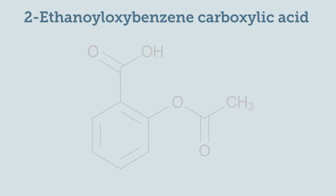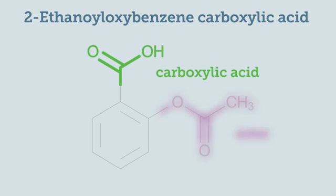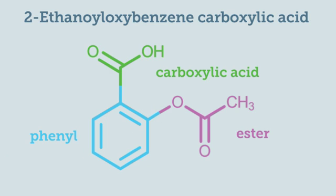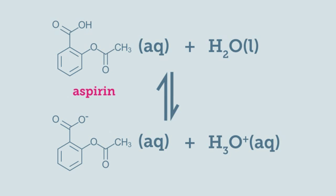The chemical name for aspirin is 2-ethanoil-oxybenzene carboxylic acid. It contains a carboxylic acid group, an ester group and a phenyl group.